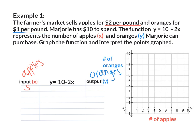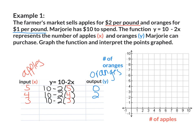What if I had 5 apples? I'm going to plug it into the equation: 10 minus 2 times 5. So 2 times 5 gives me 10, and 10 minus 10 gives me 0 oranges. For 4 apples: 2 times 4 gives me 8, so 10 minus 8 gives me 2 oranges. For 3 apples: 2 times 3 gives me 6, and 10 minus 6 gives me 4 oranges.